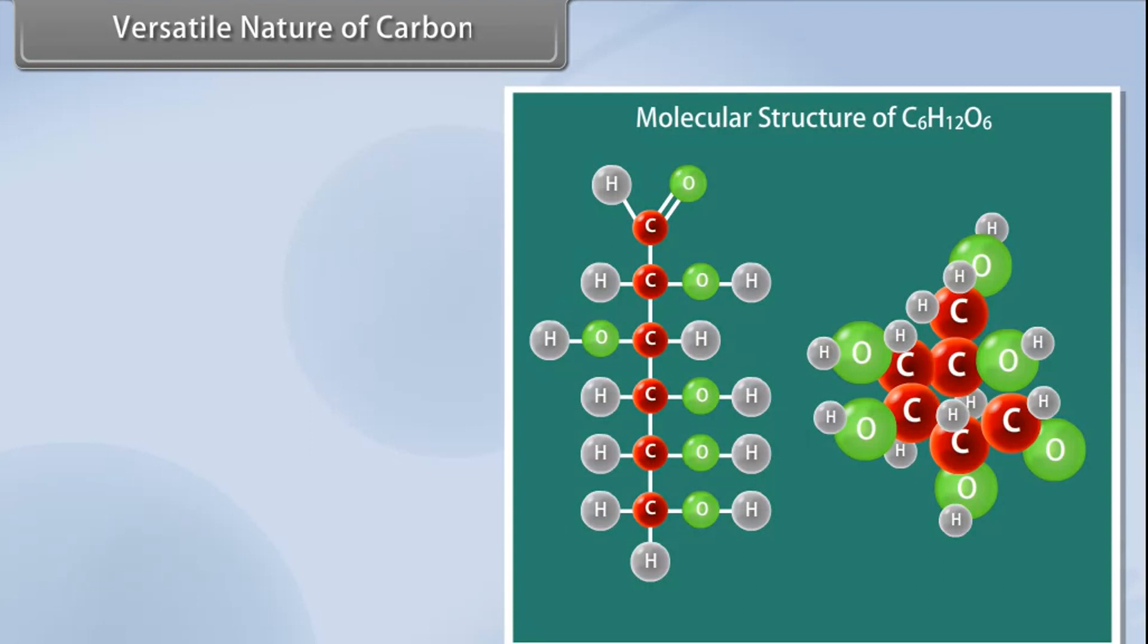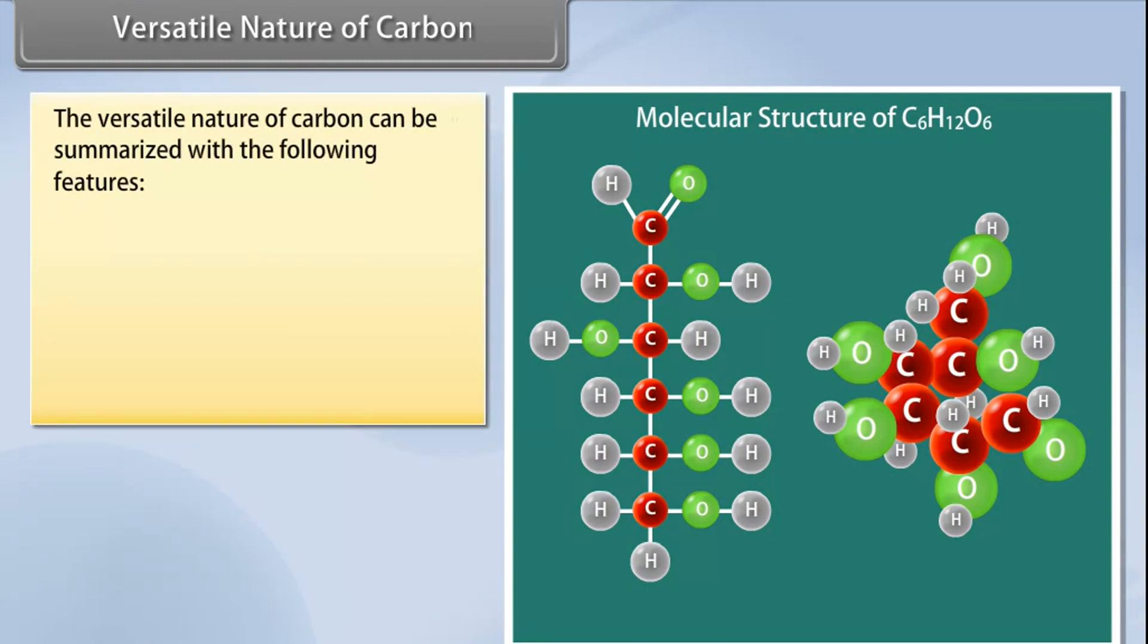Versatile nature of carbon. Organic compounds are made up of carbon, hydrogen, oxygen, and a few other elements. The unique nature of the carbon atom and the arrangement of the bond carbon forms with other atoms enable formation of organic compounds.